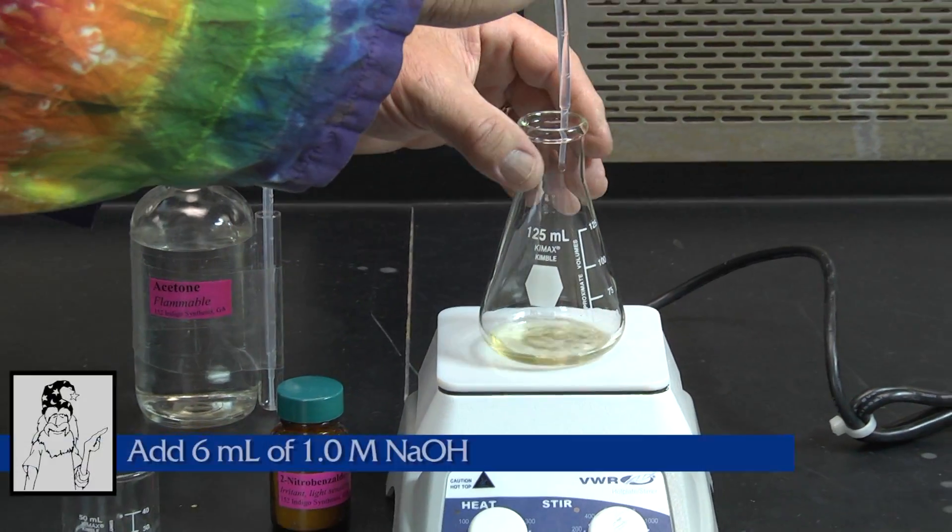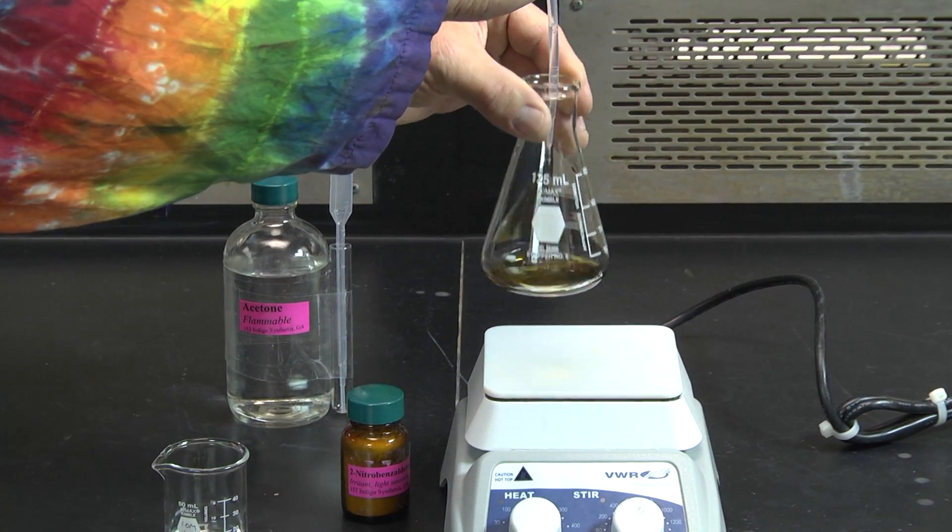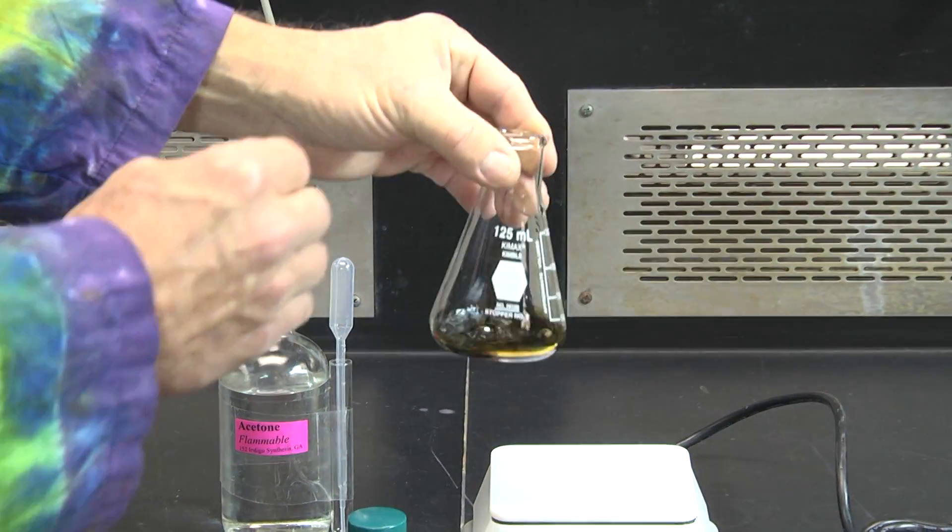When the solid has dissolved, add the sodium hydroxide a little at a time. Almost immediately, you should notice the solution turn dark. This is a sure sign that indigo is forming.